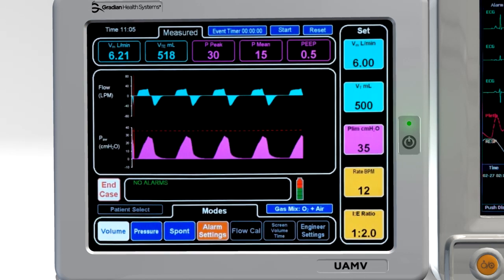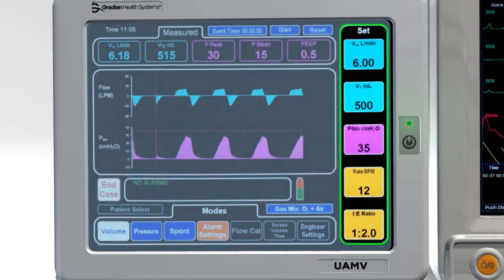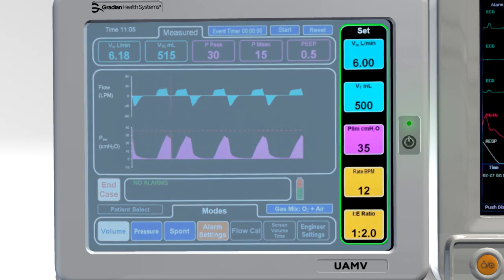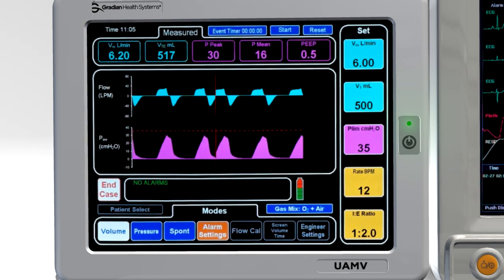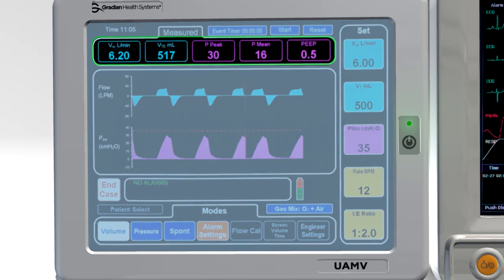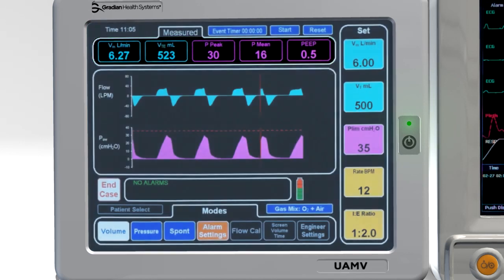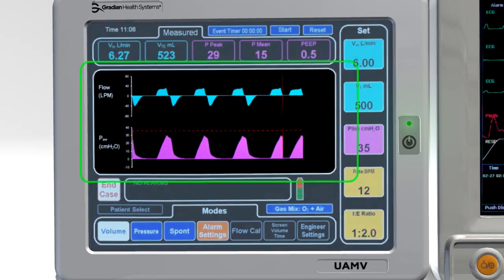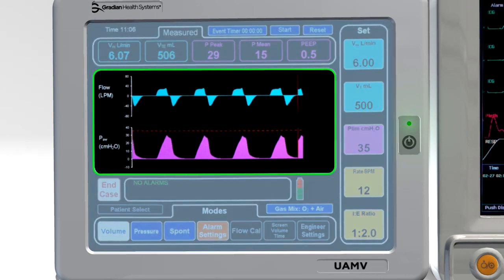Delivery settings are grouped together. Volume, pressure, rate, and IE ratio are individually adjustable. Output measurements appear at the top and show volume, pressure, and PEEP values. Several graph options are available to plot flow and pressure versus time, as well as compliance loops.